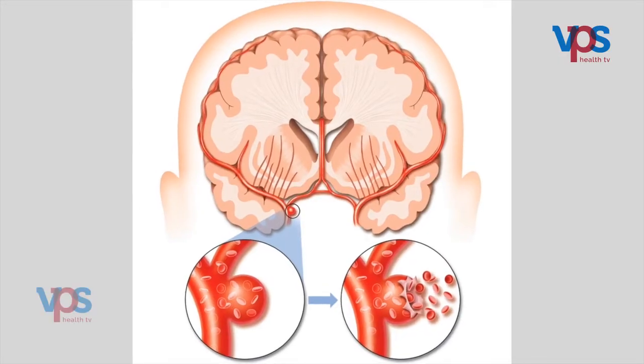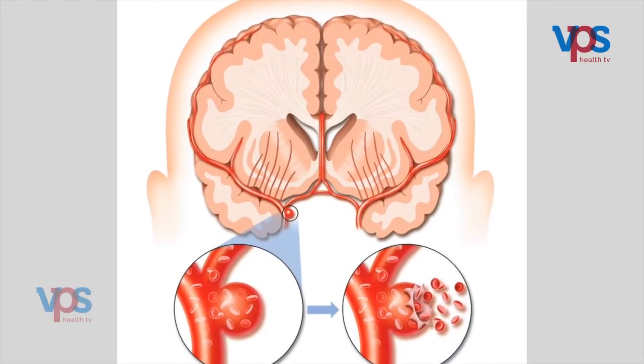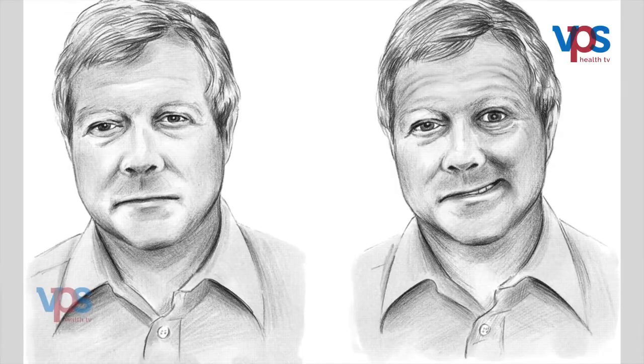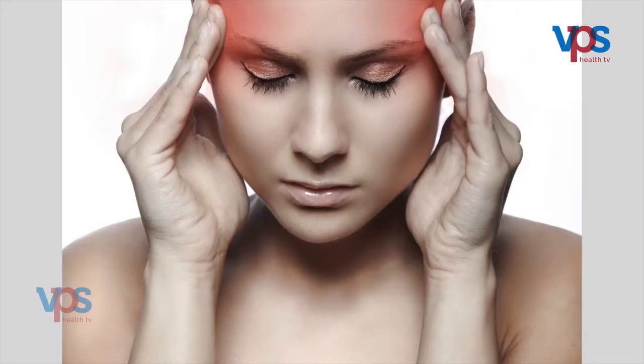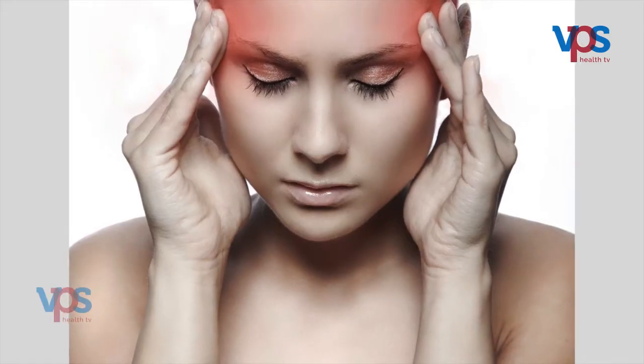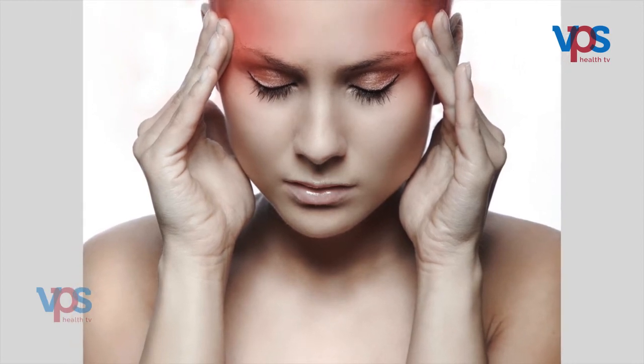By hemorrhagic, we mean that the blood vessel has ruptured and it has released blood into the substance of the brain. This may manifest in the human body in the form of weakness of one side of the body, facial drooping, speech disturbances, visual disturbances, acute onset of vertigo, headache with vomiting, loss of consciousness, seizures, and so on.